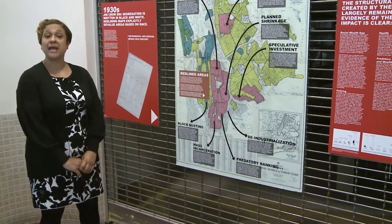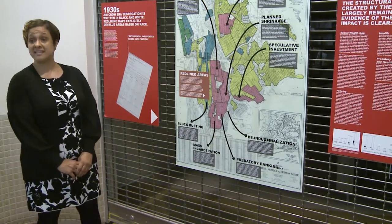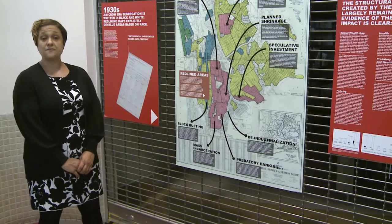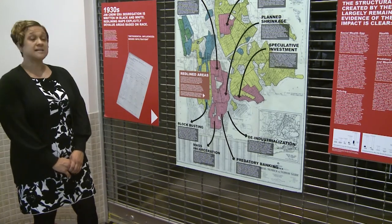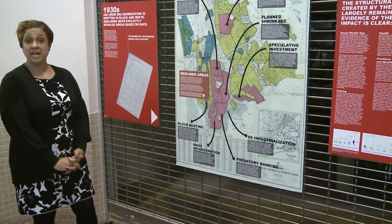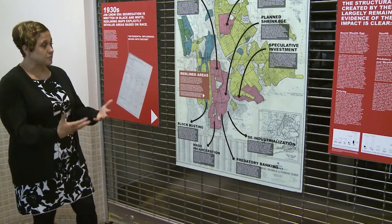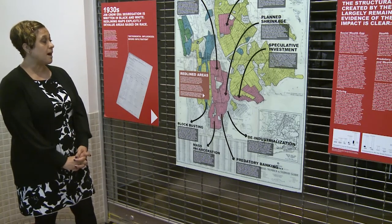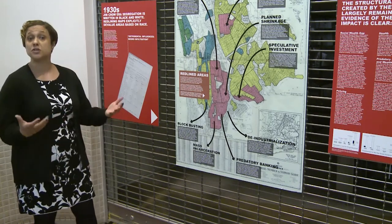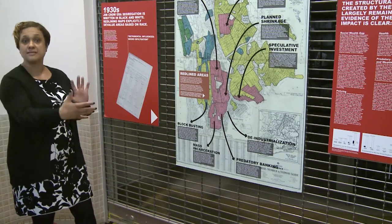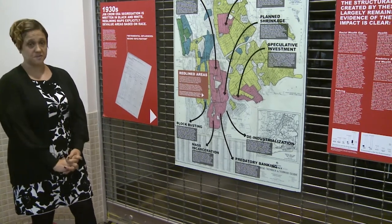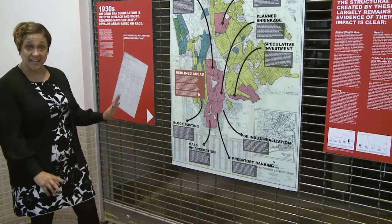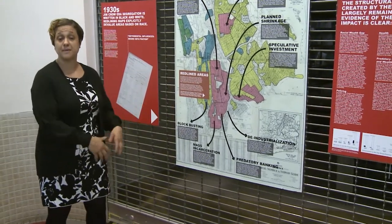Mortgages back then were amortized, so you were paying just interest. Typically, people refinanced after the 7th or 10th year. But due to the 1929 market crash, refinancing was not an option. So the federal government under President FDR decided we need to do something to stop the economic hemorrhaging, thus creating the Homeowners Loan Corporation. The HOLC's responsibility was to go out into communities, survey areas, and purchase loans — converting them to the 15 to 30-year loan — so that people's homes weren't going to be foreclosed upon. However, before doing that, they sent surveyors into communities to assess which areas were going to be safe for investment and which weren't.